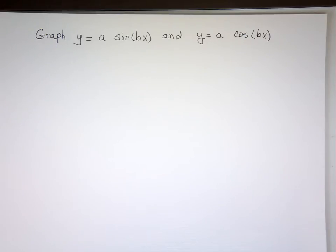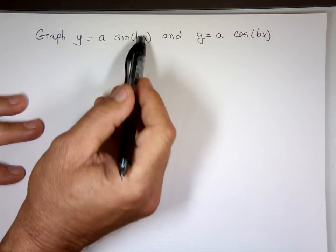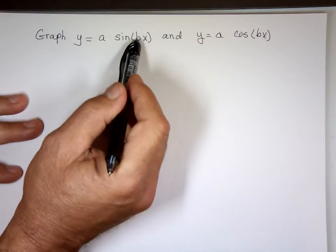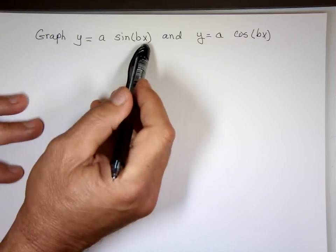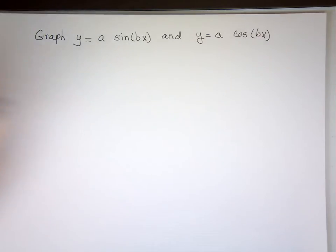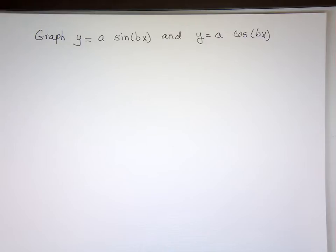The difference between this section and the previous ones is that before, there was always a one in front of x. Now it could be a two, one third, or anything. We know what A does — it causes vertical stretching up and down. What does B do?